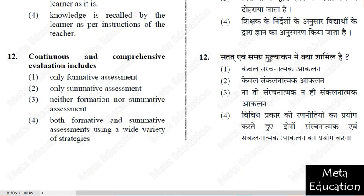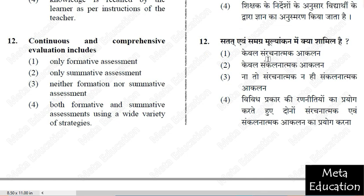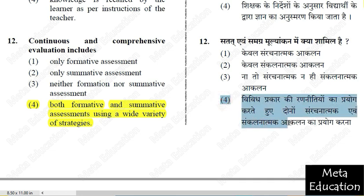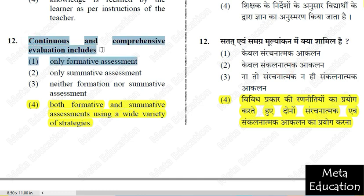Question 12: Continuous and Comprehensive Evaluation (CCE) includes — 1) Only formative assessment; 2) Only summative assessment; 3) Neither formative nor summative; 4) Both formative and summative assessment using a wide variety of strategies. The correct answer is option 4. We need to use both formative and summative assessment together using wide variety of strategies to implement CCE properly.